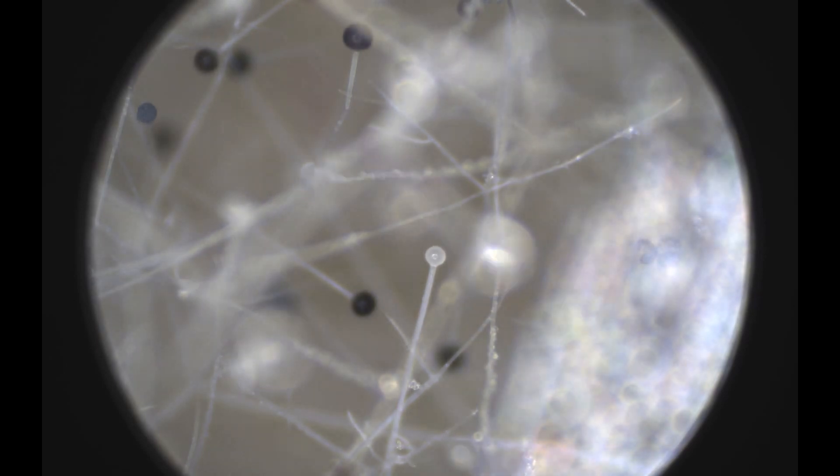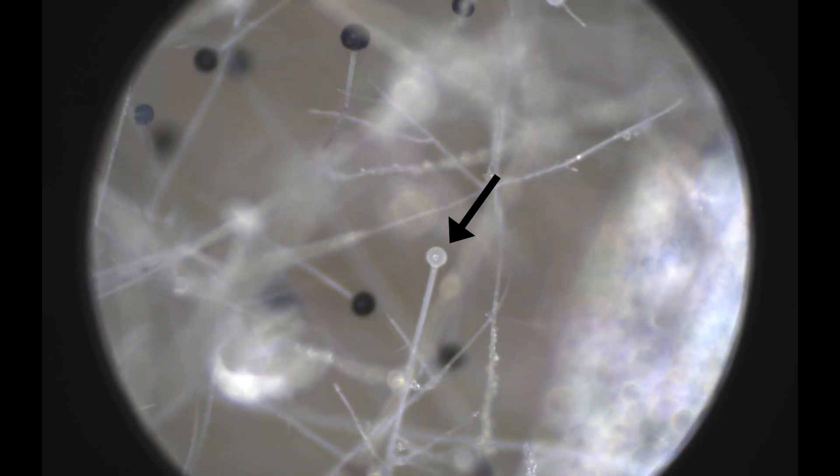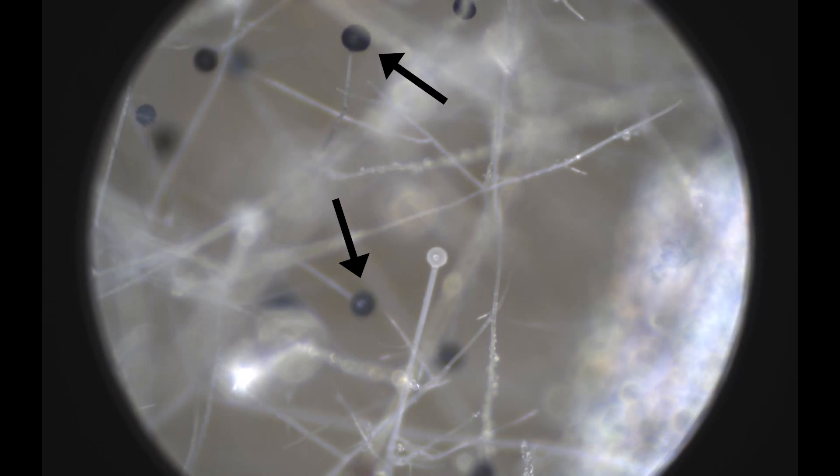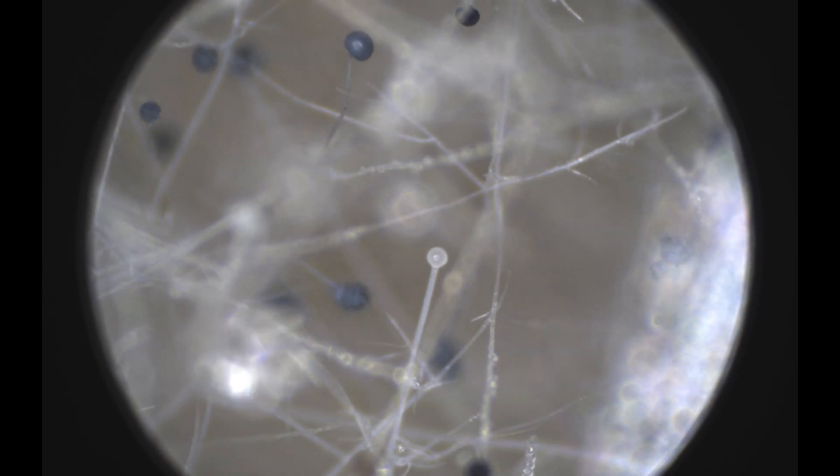For Rhizopus, young sporangia are white, but as they get larger, the spores, which are black, grow inside it and gradually turn the sporangia themselves black. Because these spores grow inside sporangia, they have a special name: sporangiospores.